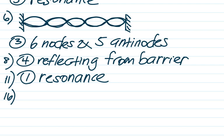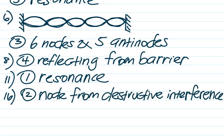Number 16 shows another standing wave pattern where point A is a node — the point of no motion due to destructive interference, where crests are meeting troughs. The answer is choice two: a node resulting from destructive interference. Just be careful: the anti-node is the opposite, the point of maximum constructive interference and maximum motion.